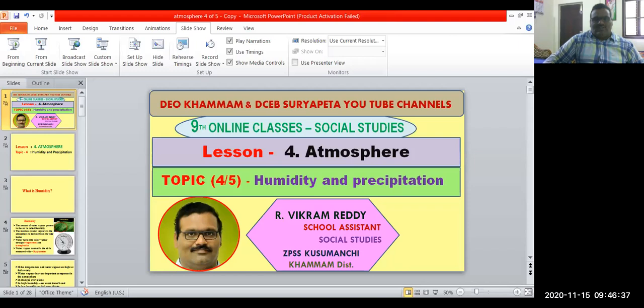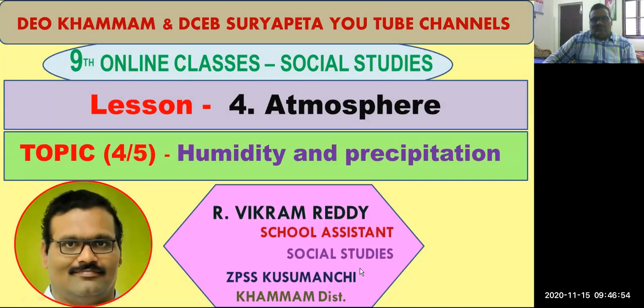Good morning, dear colleagues and my dear students. This is Vikram Radhi working as School Assistant Arts at the ZPSS Koosmanchi from Kamam district. From the last few classes, we are discussing about the different elements of atmosphere. We discussed about the structure of the atmosphere and important elements like pressure and winds. In today's class, we shall discuss another important element of atmosphere — humidity and precipitation.